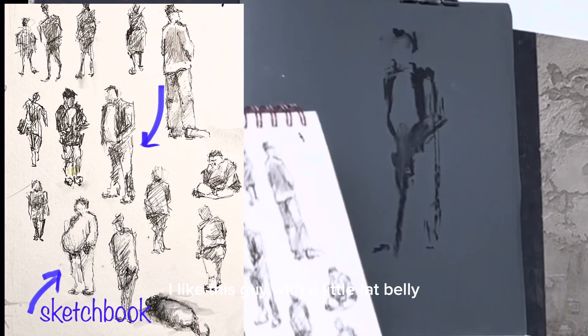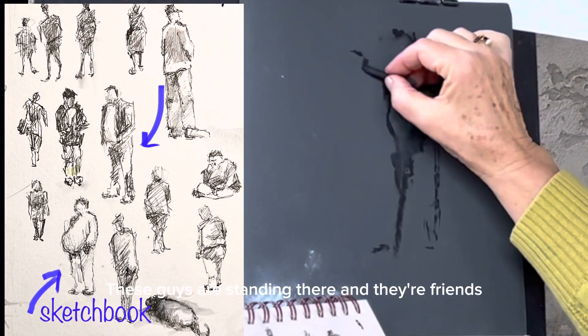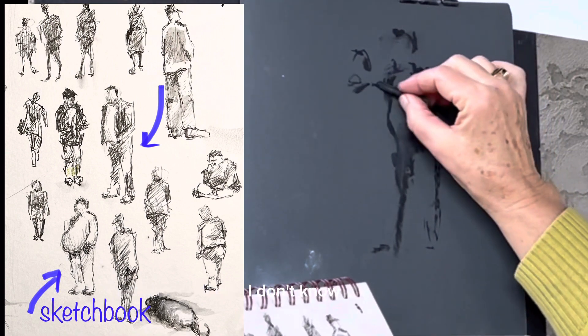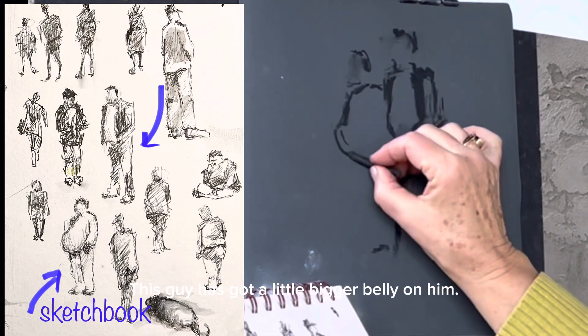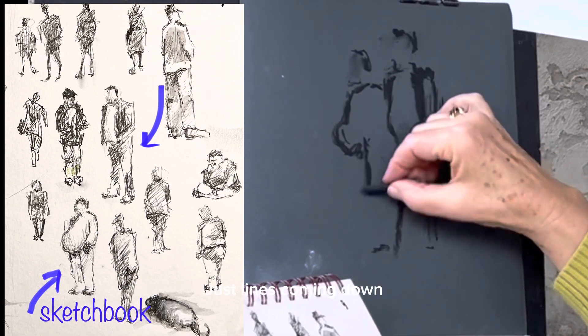Let's put another guy behind him. I like this guy with the little fat belly. So these guys are standing there, and they're friends, and they're watching, I don't know, a little parade go by maybe. This guy's got a little bigger belly on him, just lines coming down.